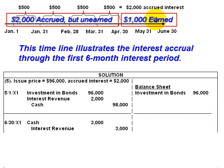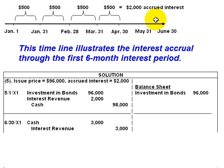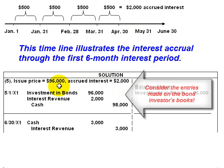However, the corporation is required to pay all $3,000 on June 30th. How do we resolve this problem? When bonds are sold between interest payment dates, they are sold with accrued interest. The buyer pays the market value of the bonds, $96,000 in this case, along with the accrued interest, $2,000. So the credit to cash to record the purchase would now be for $98,000.